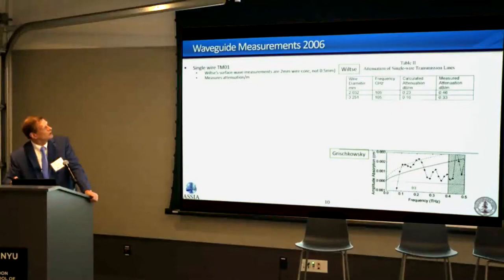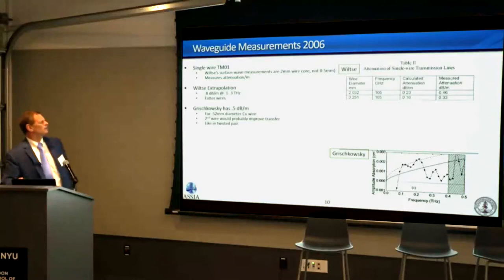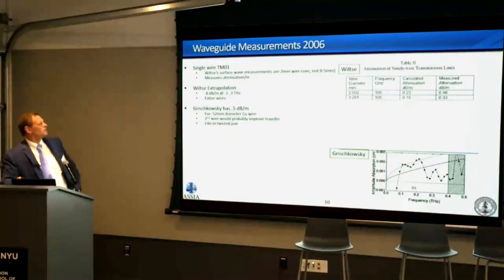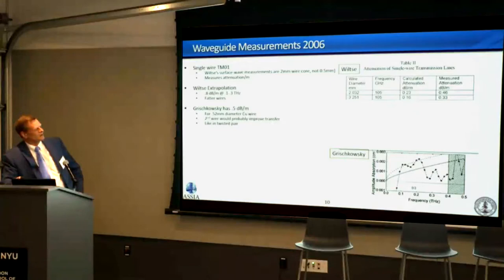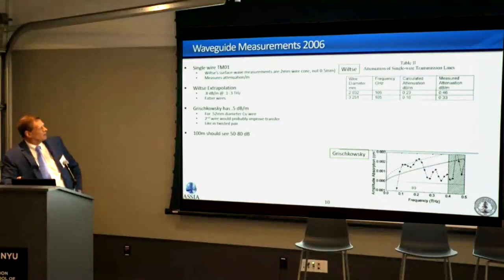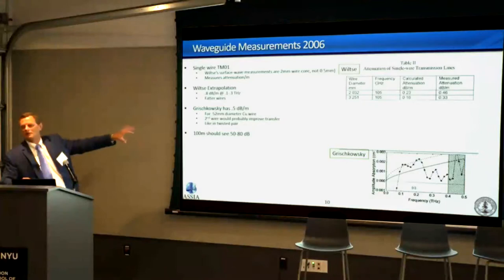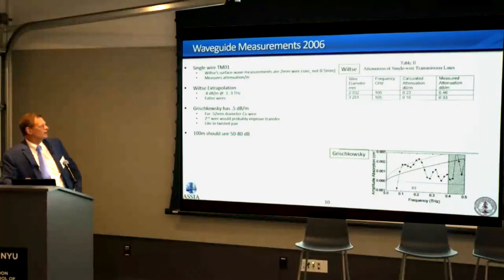There are very significant regions above 100 GHz where transmission is feasible. At 100 meters, you'd see about 50 to 80 dB of attenuation — which sounds like a lot, but if you're in the DSL space, that's not unusual and we know how to handle that. This gives at least some optimism that something feasible is possible.